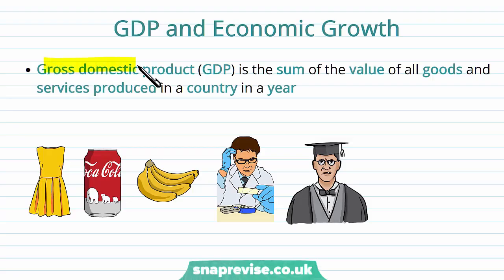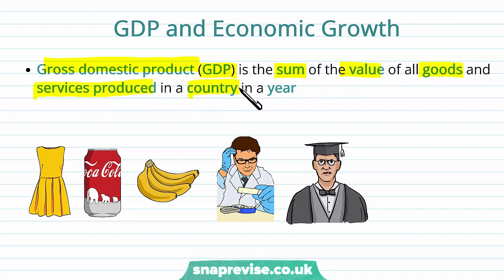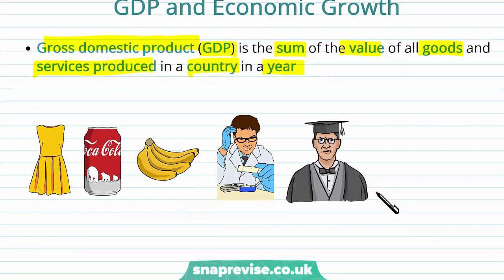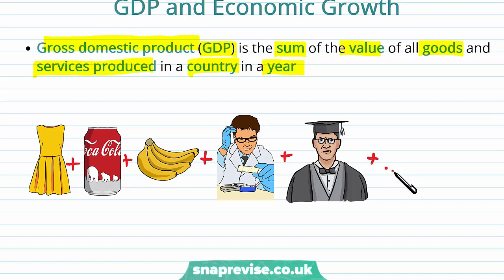We know that gross domestic product, otherwise known as GDP, is the sum of the value of all goods and services produced in a country within a year. To calculate GDP we add up the value of everything — price times quantity of all goods and services in the economy — including things like education and research and development.